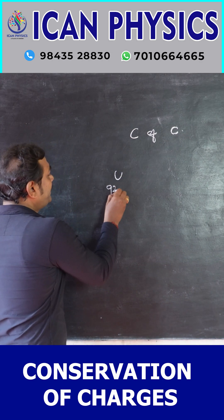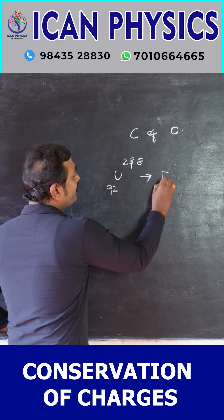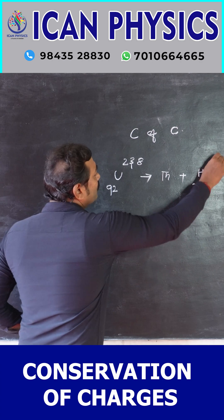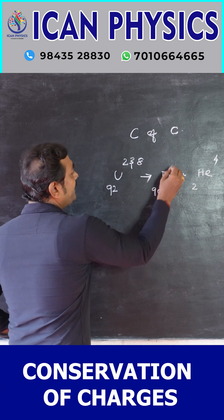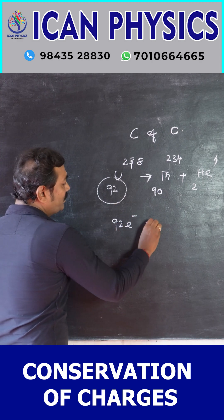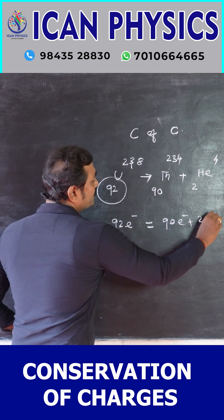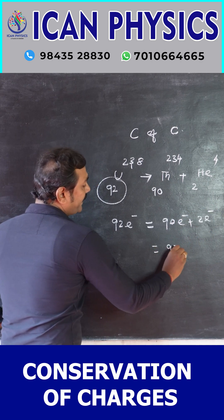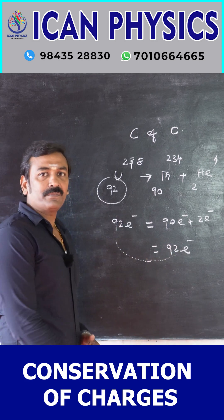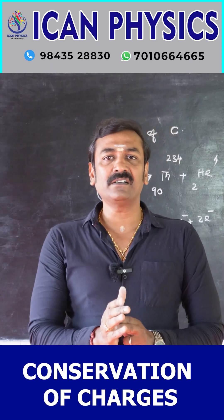So Uranium-92 when it decays, it becomes Thorium-90 plus Helium (2, 4). Here it is 90 and 34. So before decay we are having 92 electrons. After decay: 90 electrons plus 2 electrons — so totally 92 electrons. So before and after, the total number of electrons are the same. That is what we call conservation of charges.